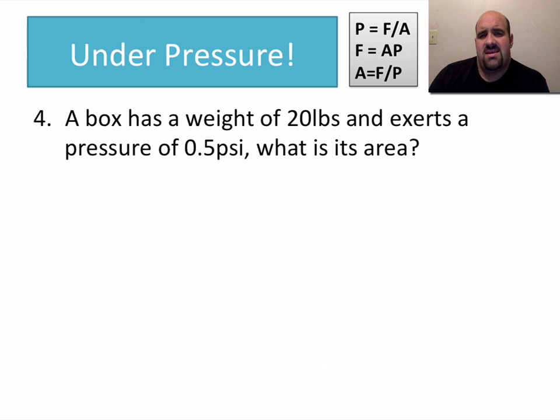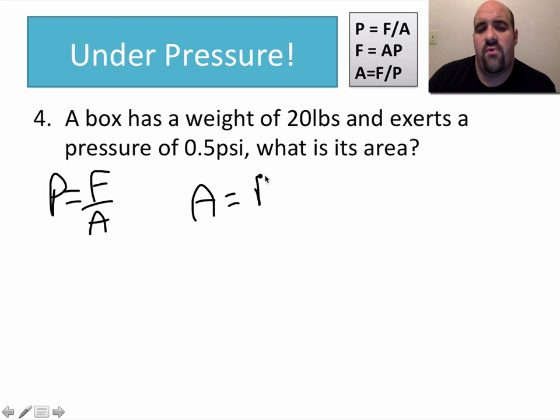Last one we're going to calculate is an area. I think I deleted the force problem by mistake. And again, force is just going to be area times pressure. So that's not too bad. But a box has a weight of 20 pounds and exerts a pressure of 0.5 PSI. Recall that PSI is pound per square inch. What is its area? So they're asking me to solve for area. We know pressure equals force over area. We know if we do some rearranging and manipulating this formula, that area equals force over pressure.